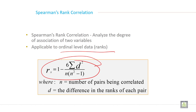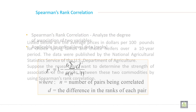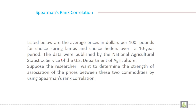This is the formula, which we have already discussed in detail. The example: listed below are the average price in dollars per 100 pounds for twice spring lamb and twice heifer over a 10-year period. The data were published by the National Agriculture Statistics Service of the U.S. Department of Agriculture. The researcher wants to determine the strength of association of the price between these two commodities using Spearman rank correlation.